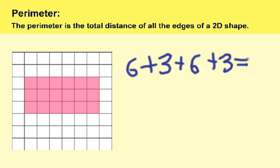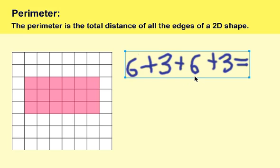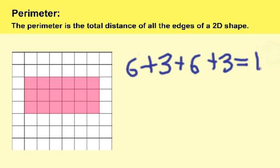Equals — all we have to do is add up the total distance of the four sides. So we have six plus three is nine. Nine plus six is fifteen. Fifteen plus three is eighteen. So we have a total of eighteen. Therefore, the perimeter is eighteen.